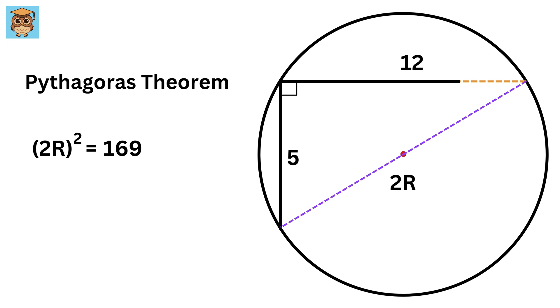which is equal to 169, or 13². So 2r equals 13 and r equals 13/2. And that's it.